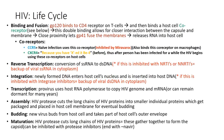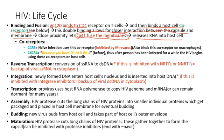GP120 binds to the CD4 molecules found on T cells. Once bound, it needs a co-receptor. Once it binds those co-receptors, this double binding allows for closer interaction between the viral envelope and the membrane of the host cell. This close proximity allows GP41 — the transmembrane protein — to do its job: causing the final step of fusion of those membranes together, releasing the viral RNA into the host cell.